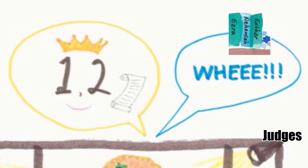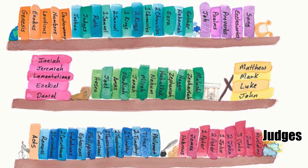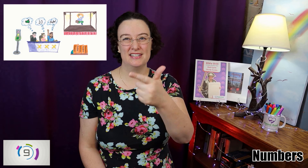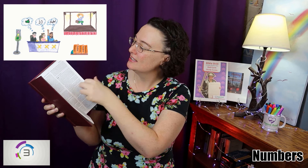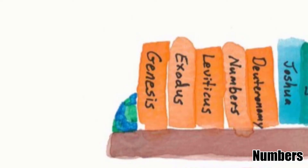Joshua judges Ruth. Numbers. So we have Genesis, Exodus, Leviticus, Numbers. Genesis is at the beginning, then comes Exodus, Leviticus, and then Numbers. I found it — Leviticus, Numbers, Deuteronomy.